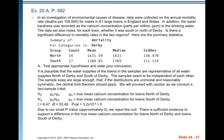Checking conditions: it is plausible that the water supplies of towns in the samples are representative of all water supplies north and south of Derby. The samples seem independent of each other. The sample sizes are large enough that if the distributions are unimodal and reasonably symmetric, the central limit theorem should apply — they're bigger than 15 but less than 40, so the distributions do need to be somewhat symmetric and unimodal. If counts were greater than 40, skewness wouldn't matter, but we'll proceed with caution and conduct a two-sample t test.